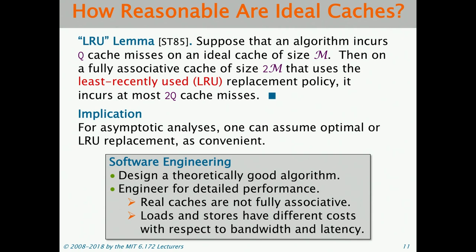Here's a software engineering principle: when trying to get good performance, first come up with a theoretically good algorithm that has good bounds on work and cache complexity. After that, start engineering for detailed performance — worrying about real-world caches not being fully associative, loads and stores having different costs with respect to bandwidth and latency, and so on. Coming up with a theoretically good algorithm is the first-order bit to getting good performance.